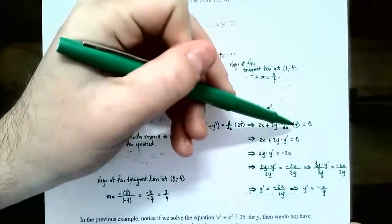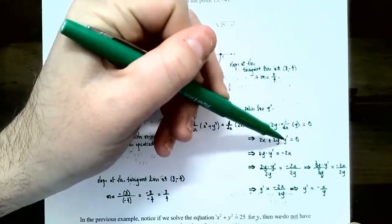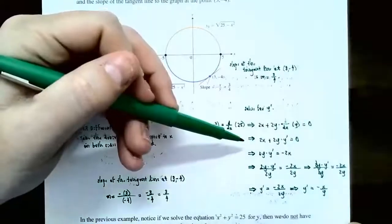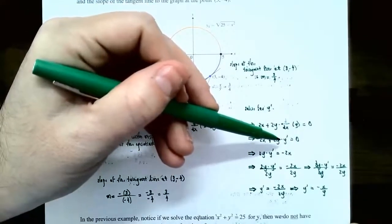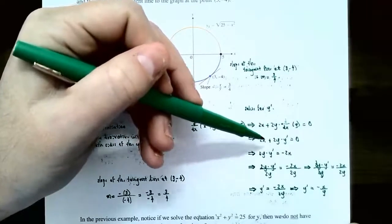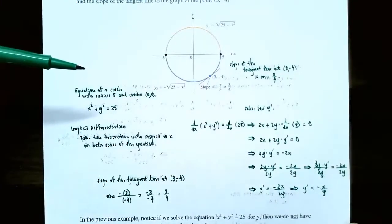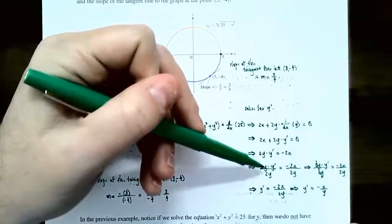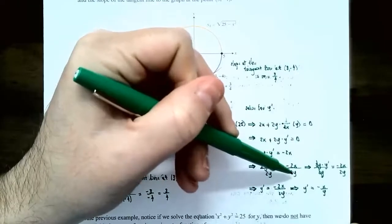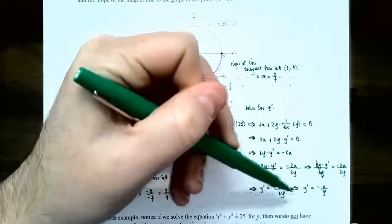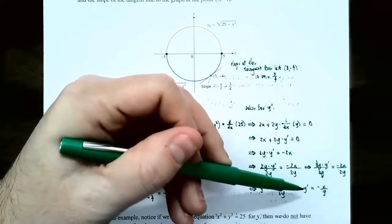We have one derivative left to find from the chain rule. So 2x plus 2y times y prime equals 0. After taking the derivative, we solve for y prime. Subtract 2x from both sides: 2y times y prime equals negative 2x. Divide both sides by 2y: y prime equals negative 2x divided by 2y, which simplifies to y prime equals negative x divided by y. This is the derivative for the equation of a circle at any point on the circle.